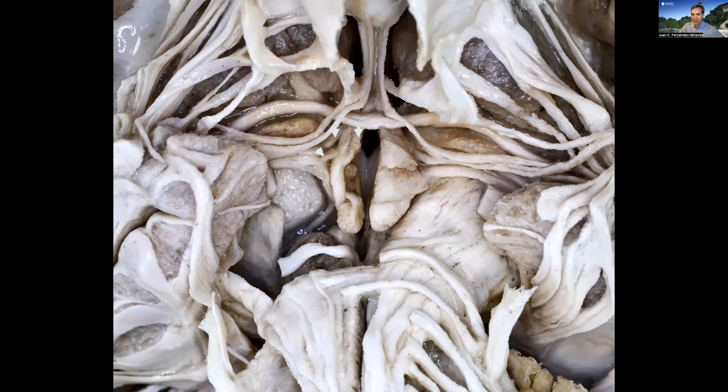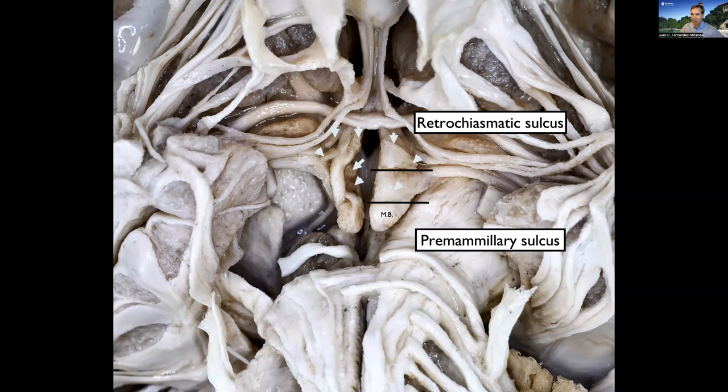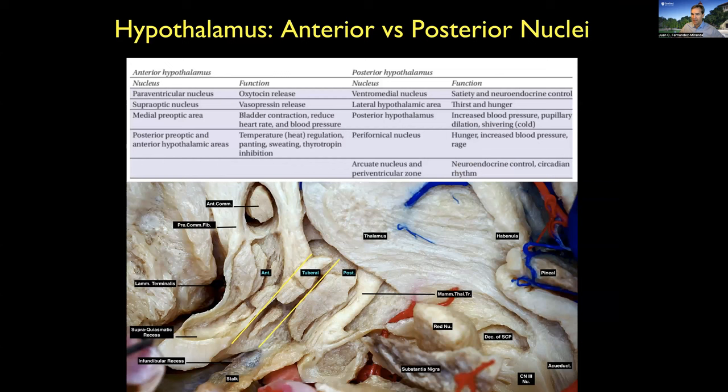Looking at this dissection, we identify different nuclei of the hypothalamus. We describe two key landmarks: the retrochiasmatic sulcus and the premammillary sulcus. These are the two areas of dissection I use to preserve the key areas of hypothalamic tissue — the anterior hypothalamus, which is anterior to the retrochiasmatic sulcus, and the posterior hypothalamus, which is posterior to the premammillary sulcus. If I stay within these two lines, I access the infundibular or arcuate nuclei, which control pituitary function and are already injured by these tumors.